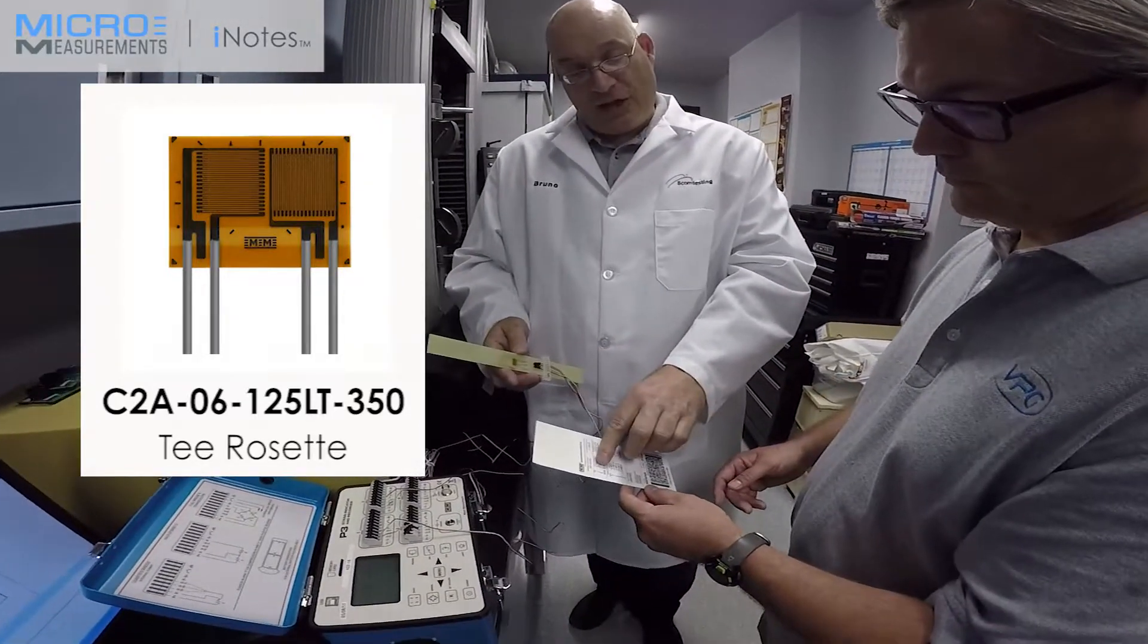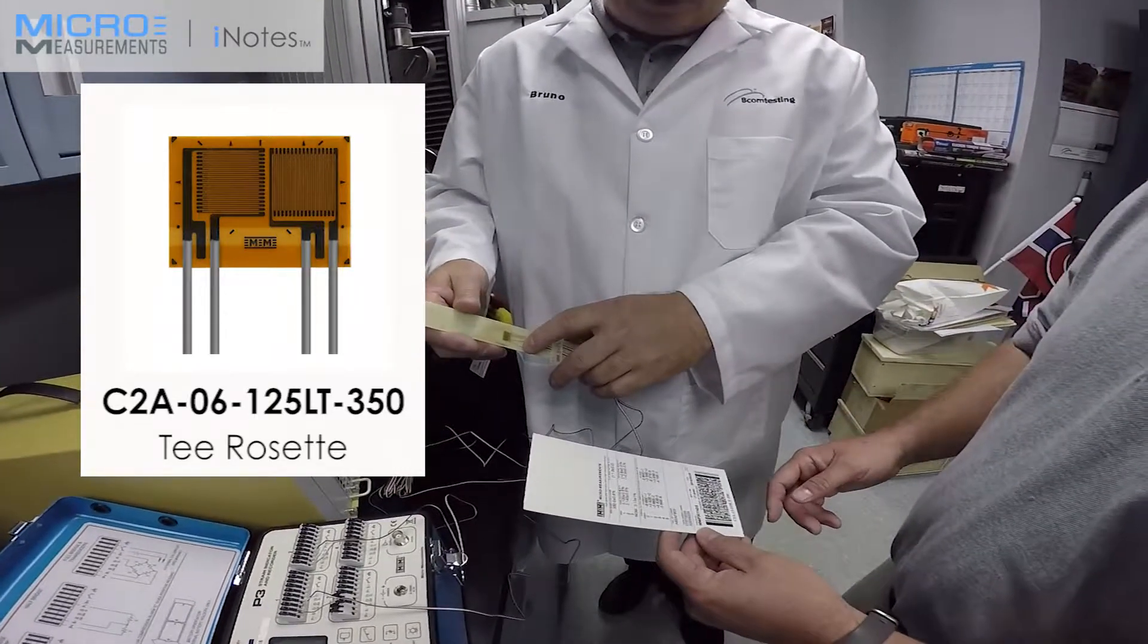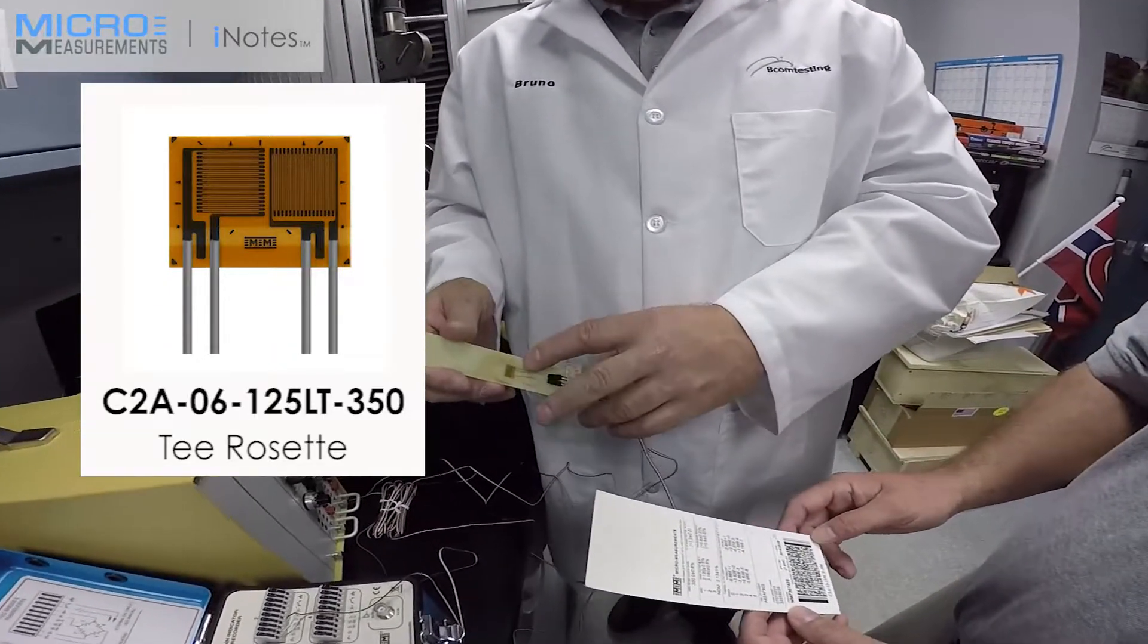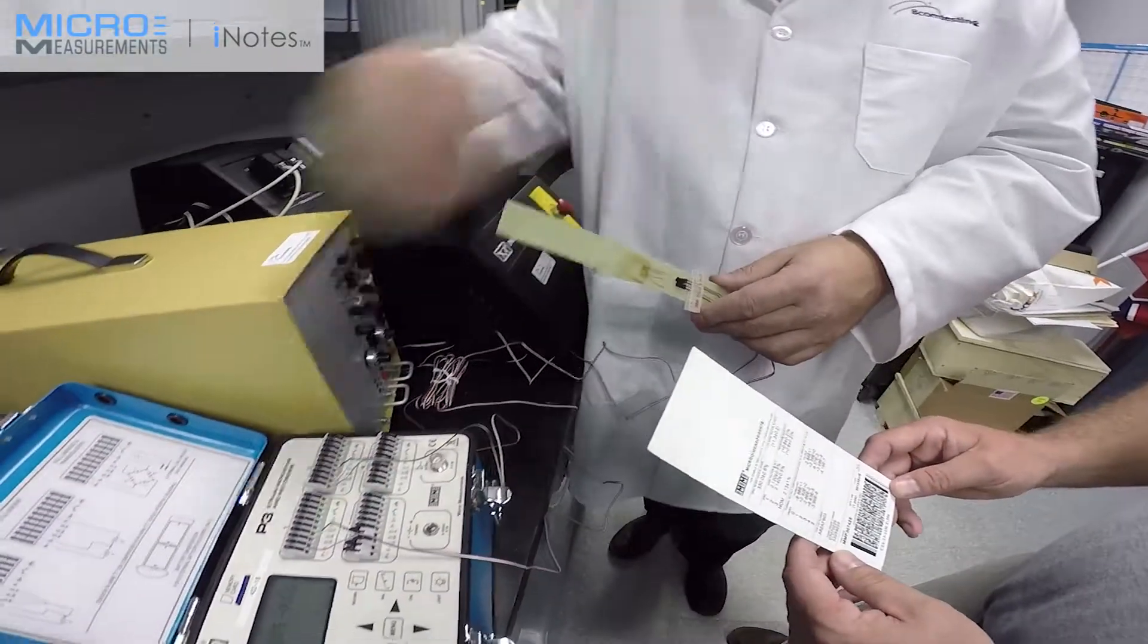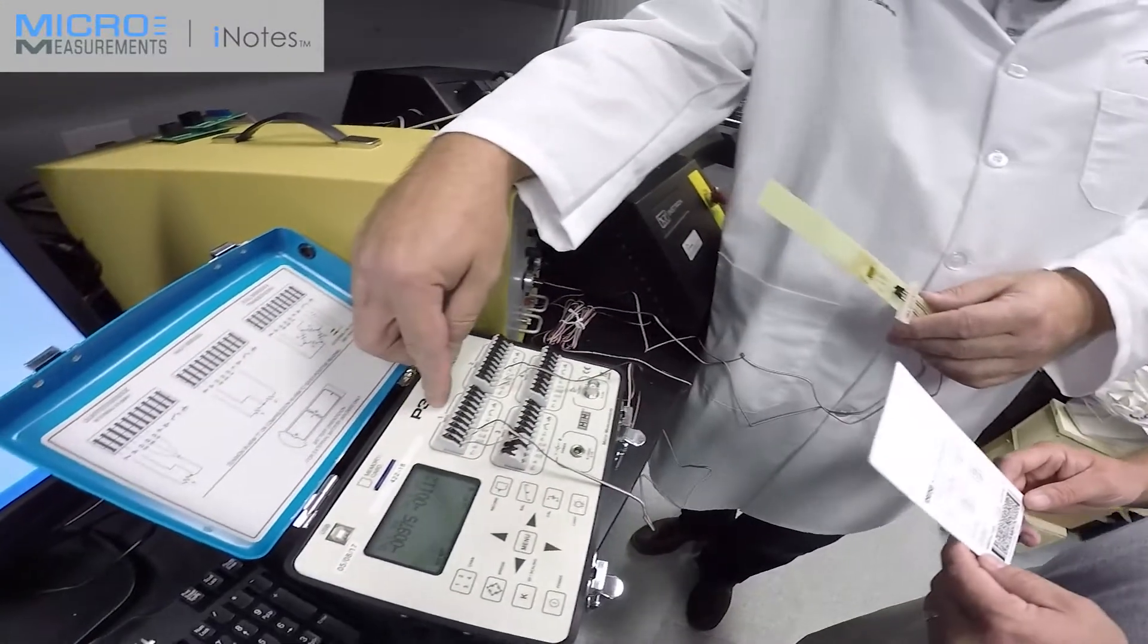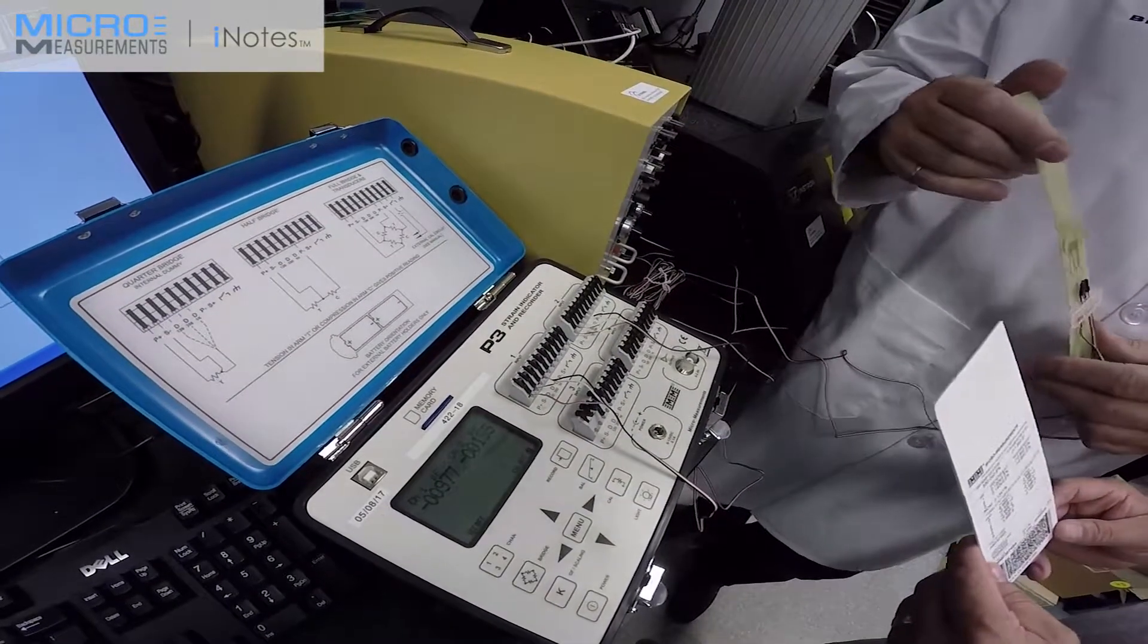The first channel on this gauge, which is actually on the left side, is your transverse direction and your axial direction is on the number two here. And if you look at the wiring on the actual P3, we actually did the exact same thing. We used channel one for transverse and channel two for axial.